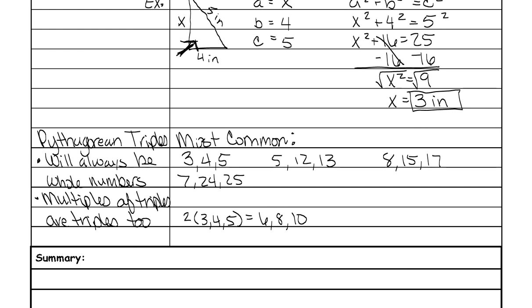Another example would be to multiply the 5-12-13 by 4. So 5 times 4 is 20, 12 times 4 is 48, and 13 times 4 is 52. That is also a triple. So multiples of triples are also triples. Go ahead and turn your page over.